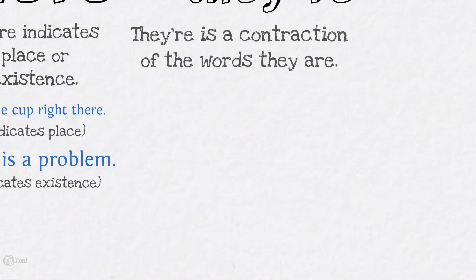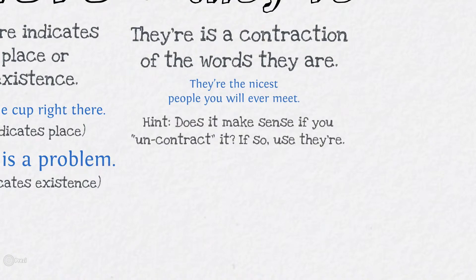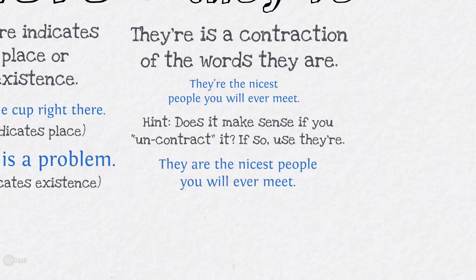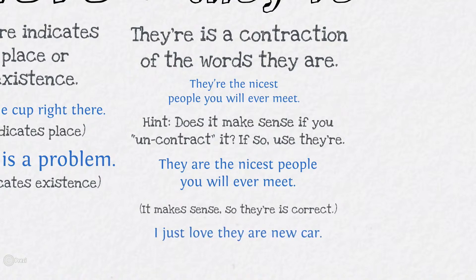They're is a contraction of 'they are': 'They're the nicest people you will ever meet.' To check, uncontract it to see if it makes sense. 'They are the nicest people you will ever meet' — it makes sense, so they're is correct. 'I just love they are a new car' — does not make sense, so use their instead.